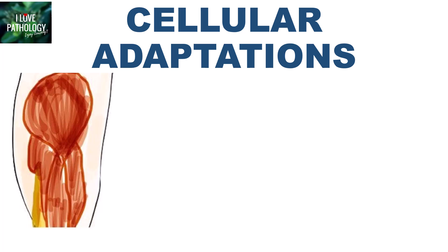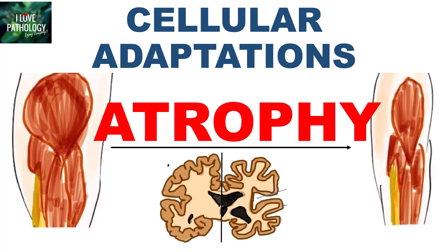We will learn about the general concepts of cellular adaptations and in detail, we will try to understand the concepts of atrophy. In the next few minutes, we will look into what cellular adaptations are, what are the different types of adaptations, and then we will move on to understand the concepts of atrophy.